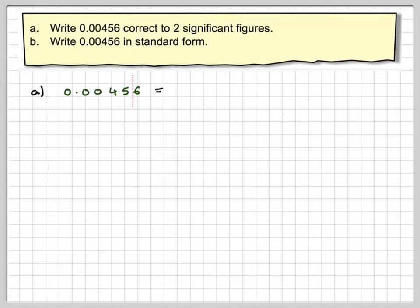So we need to look at the split between the second and the third. Now that 6 will make that 5 a 6, and therefore the correct answer is 0.0046 to two significant figures. What you mustn't do is put in a 0 afterwards. It just means it will be two figures.